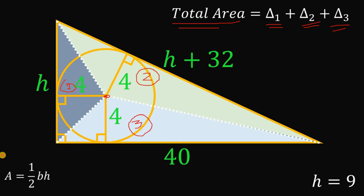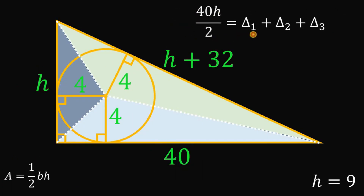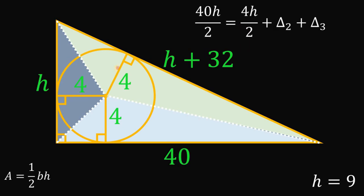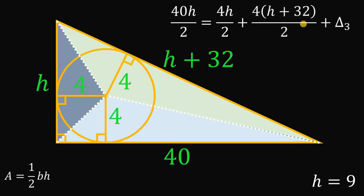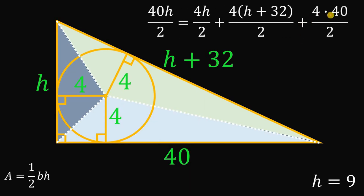The total area of the big triangle must equal the sum of the areas of the three smaller triangles. Using area = one-half times base times height: the big triangle has area = 40h/2. The first triangle has base h and height 4, so area = 4h/2. The second triangle has base (h + 32) and height 4, so area = 4(h + 32)/2. The third triangle has base 40 and height 4, so area = one-half times 4 times 40.